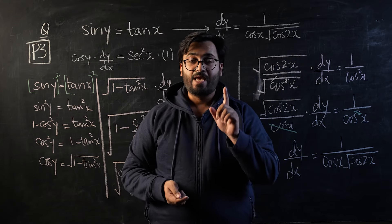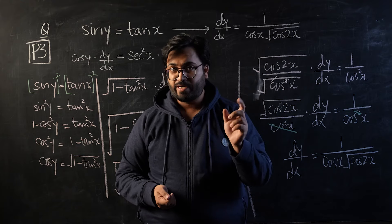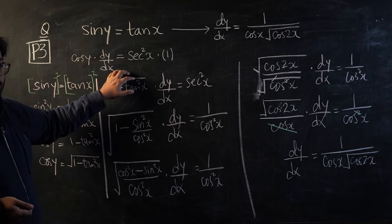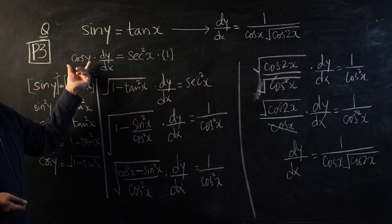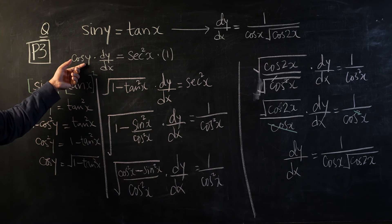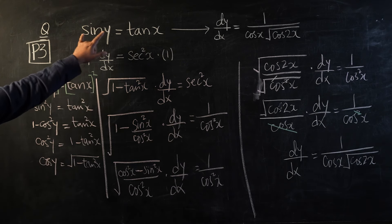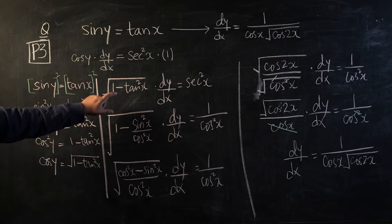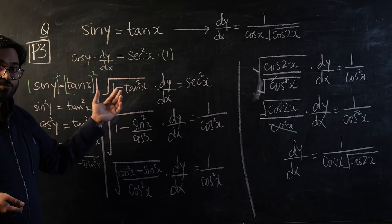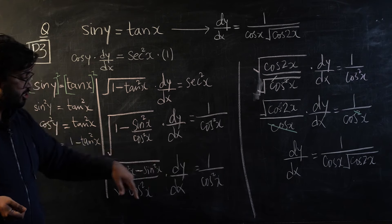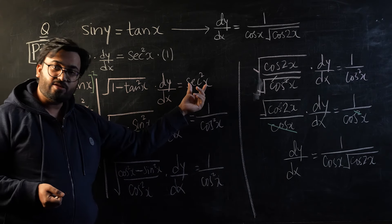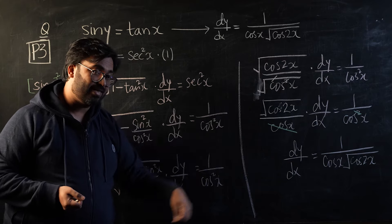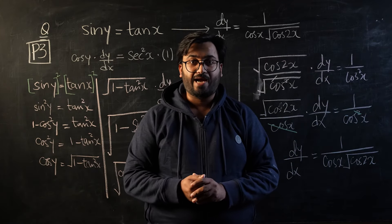This is a tricky question, not in terms of differentiation but in terms of the tactic you need to maneuver the equation into the required form. The trouble students had was not with differentiation — that was fine. The problem was getting rid of cos y, which was not straightforward. What we did was square both sides, replace sine squared y with 1 minus cos squared y, make cos y the subject, substitute it, and resolve into a double angle value and a cos x value.